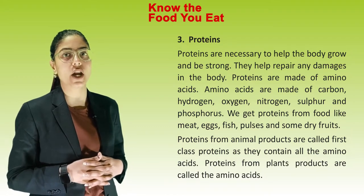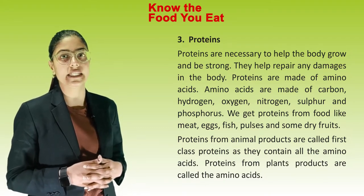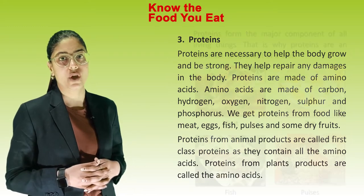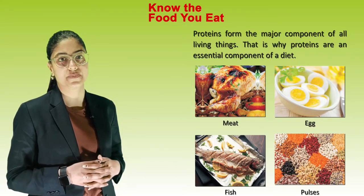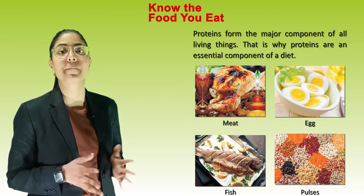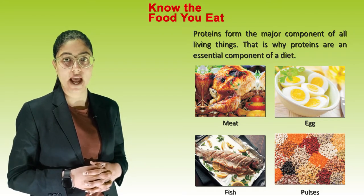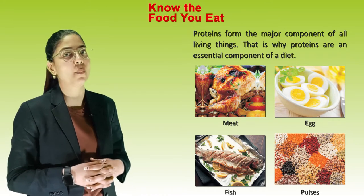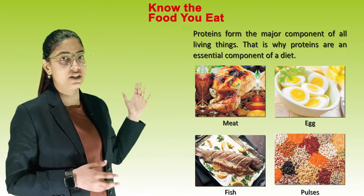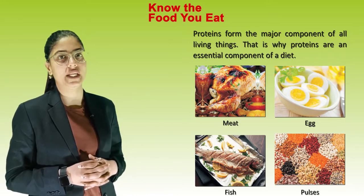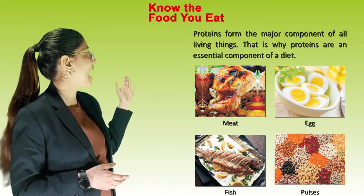Proteins from animal products are called first class proteins as they contain all the amino acids. Proteins from plant products are called second class proteins. Proteins form the major component of all living things; that is why proteins are an essential component of a diet. Sources include meat, eggs, pulses and fish.